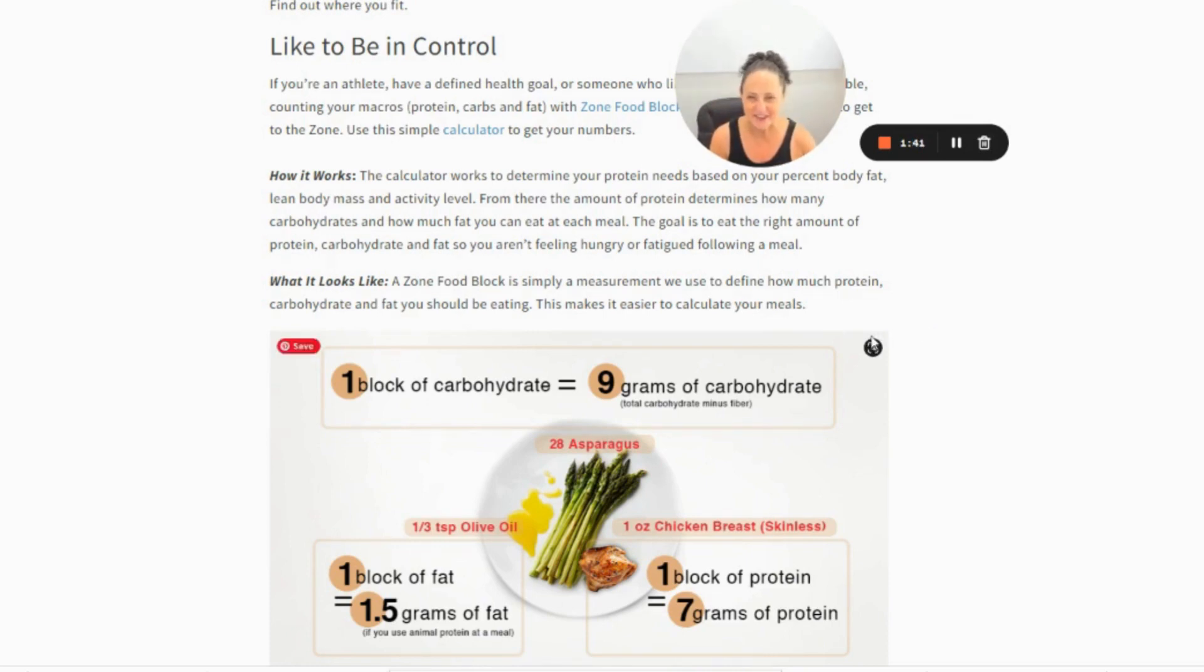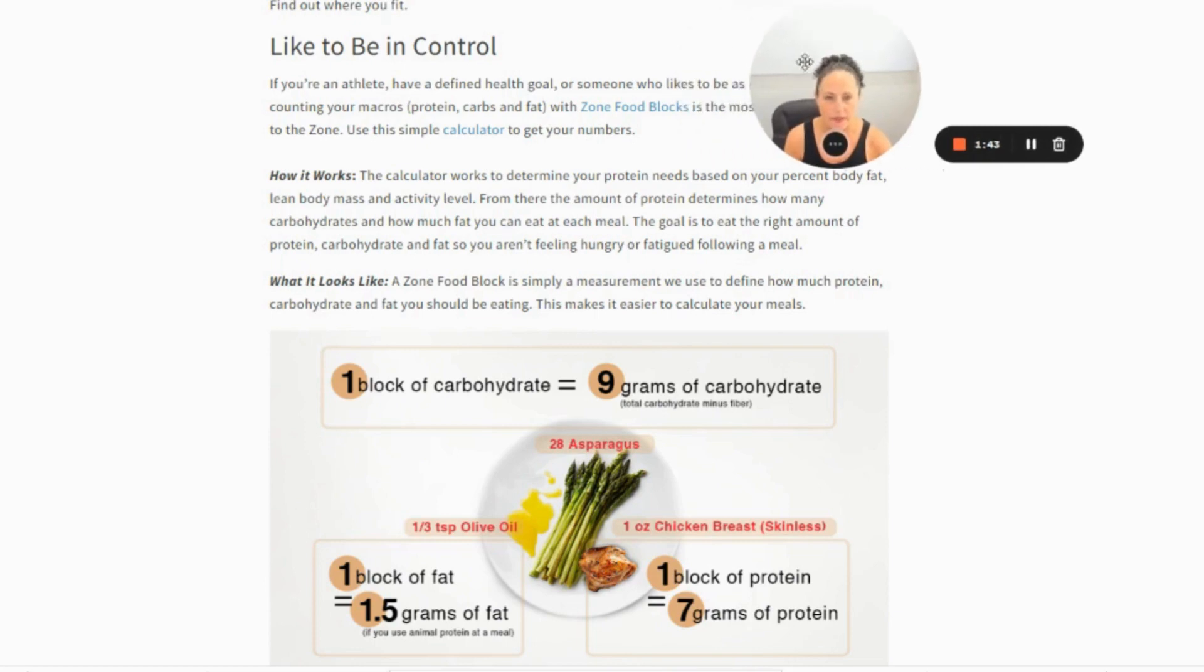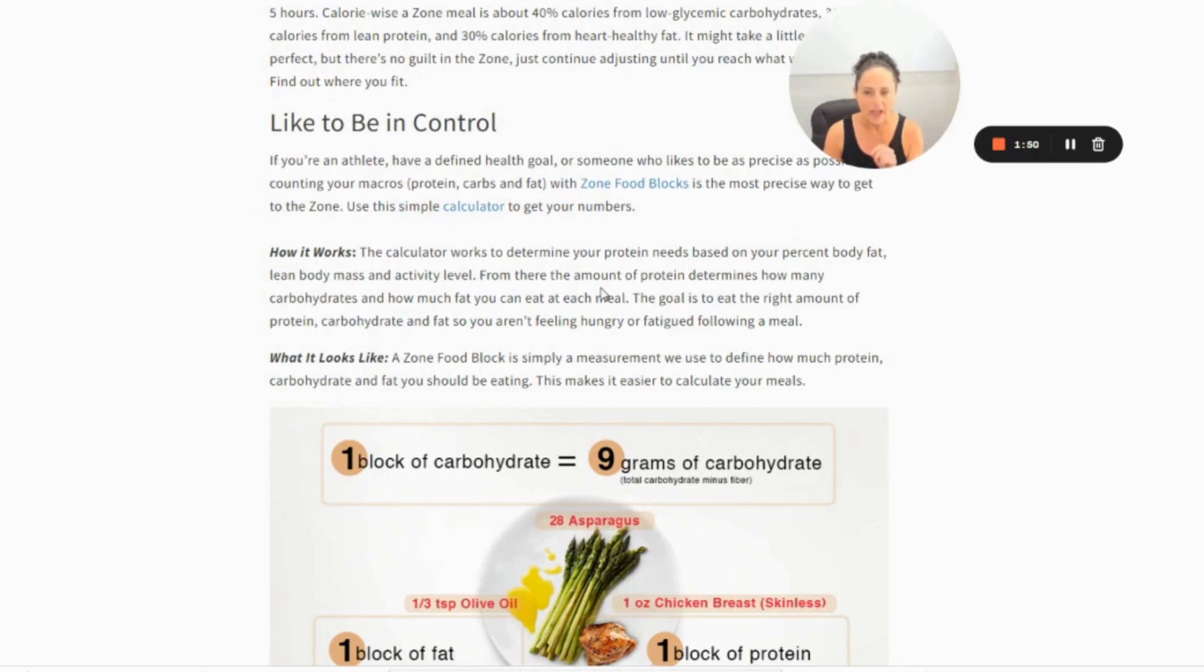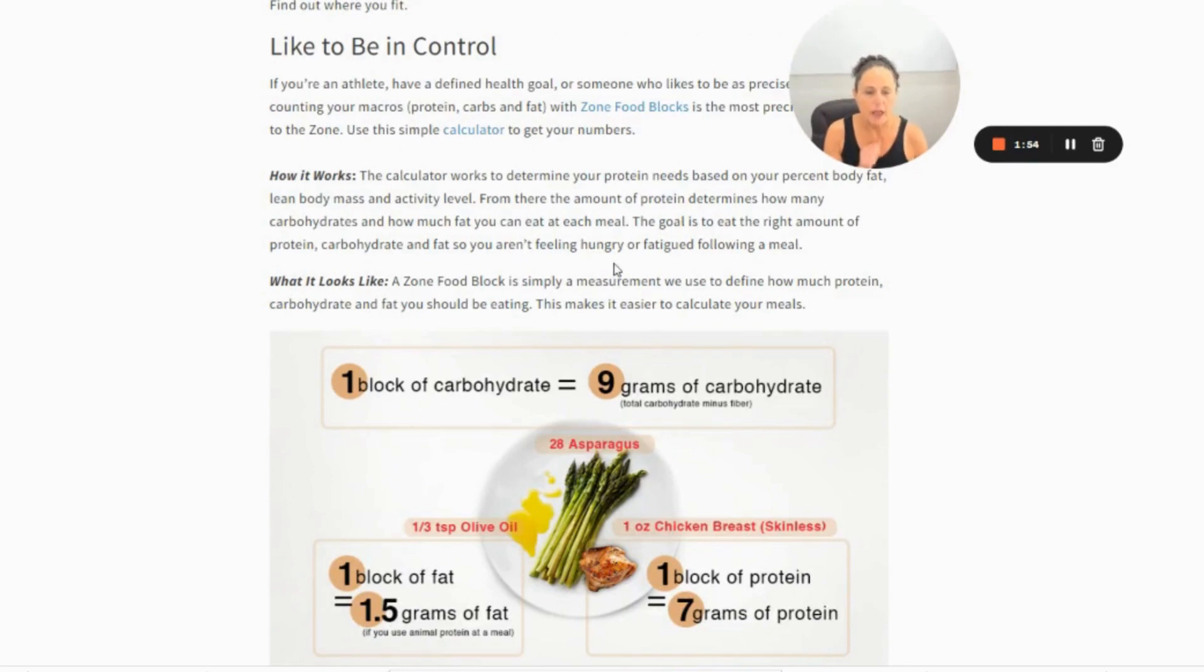All right so let's get started with this. First of all with the Zone we're going to be working in what we call a block system. Here's what your block looks like. First of all there is a calculator, I'm going to leave a link for that, that you can go on to—it's called zonediet.com—and this is where I'm getting the majority of my resources for you. So it's a great place, there's a ton of information on there for you to really dig deep if that's something you choose to do.